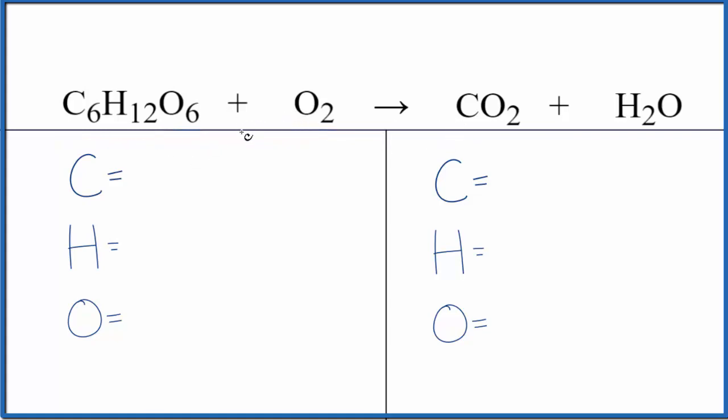So let's start with the type of reaction. We have this hydrocarbon here, glucose, and it's combining with oxygen gas. We end up with carbon dioxide and water. So when we have this carbon dioxide and water, there's a hydrocarbon and oxygen gas. The type of reaction is combustion.